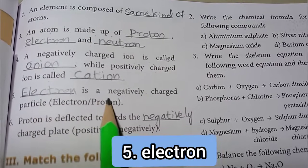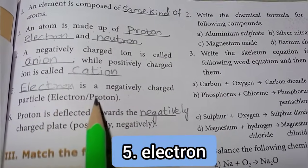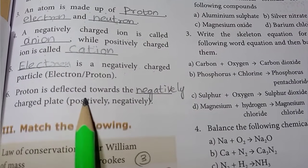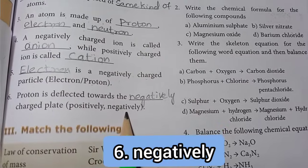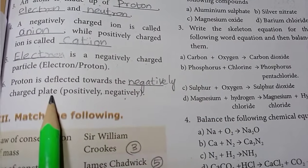Fifth one: Electron is a negatively charged particle. Electron is deflected towards the plate, positively or negatively charged plate. So negatively charged plate is the answer.